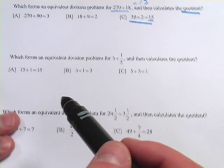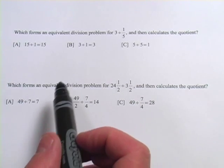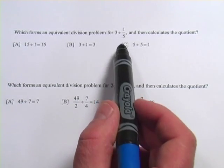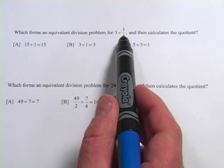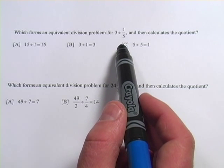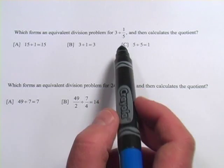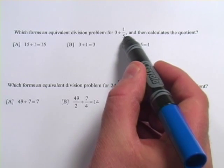Let's look at another one. They get a little bit trickier. This one says, which forms an equivalent division problem for 3 divided by 1/5, and then calculates the quotient? Well, you could plug that into your calculator, although 3 divided by 1/5 might be a little bit tricky to do. One thing I like to do when I see a fraction like this, a 5 on the bottom...